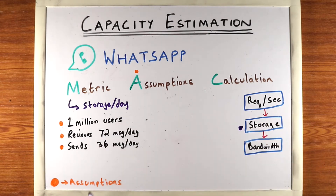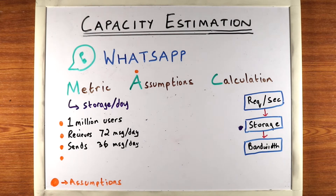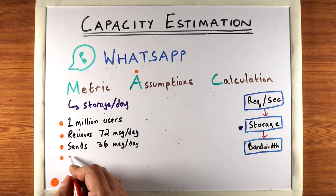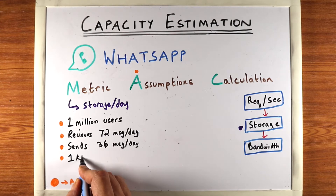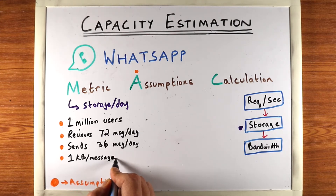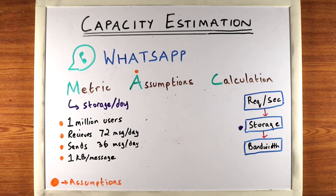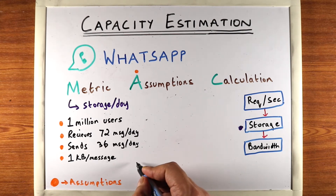We've made these assumptions when we were estimating requests per second, and we can use those same assumptions to calculate how much storage we'll need. We need one more assumption: we know how many messages we're sending per day, so we should also know the average size of each message. Let's assume an average size of one kilobyte per message. This is pretty large — let's say we're only doing text messages, no images.